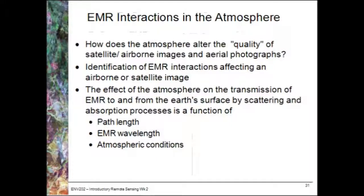Electromagnetic radiation in the actual atmosphere is really important. It can be used for either studying the atmosphere itself, or it can be more of a hindrance when you're wanting to study something on the surface of the Earth and the atmosphere is actually blocking those features or affecting the quality of that imagery. The atmosphere affects transmission of light down to the surface of the Earth in that it scatters and absorbs light.